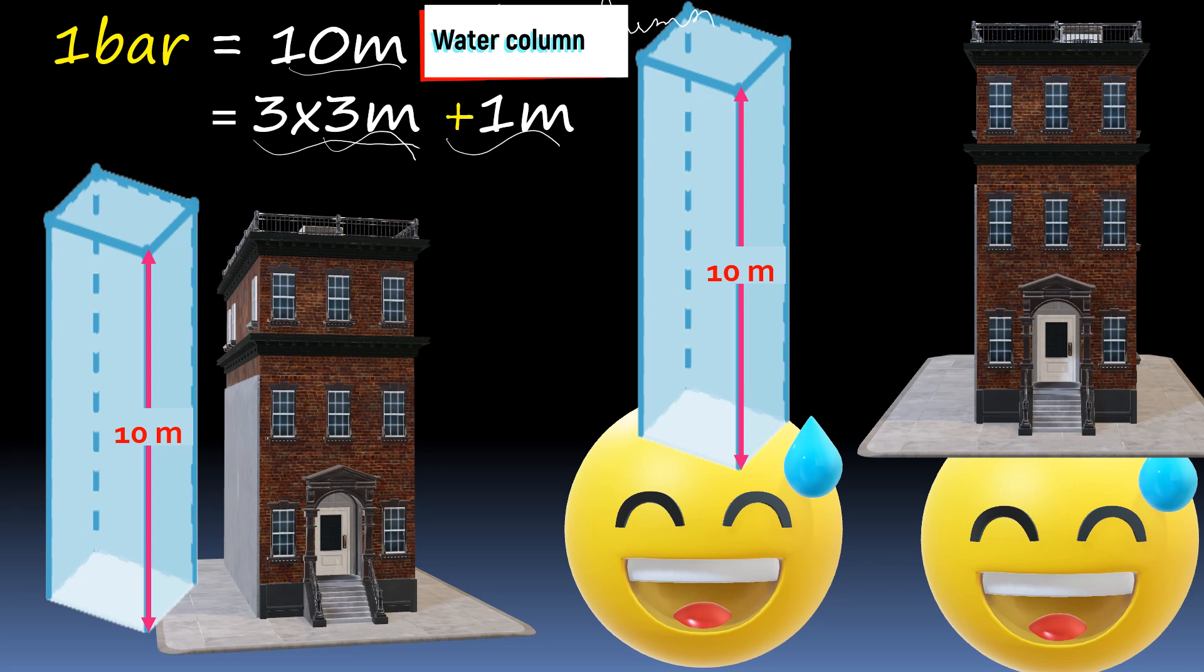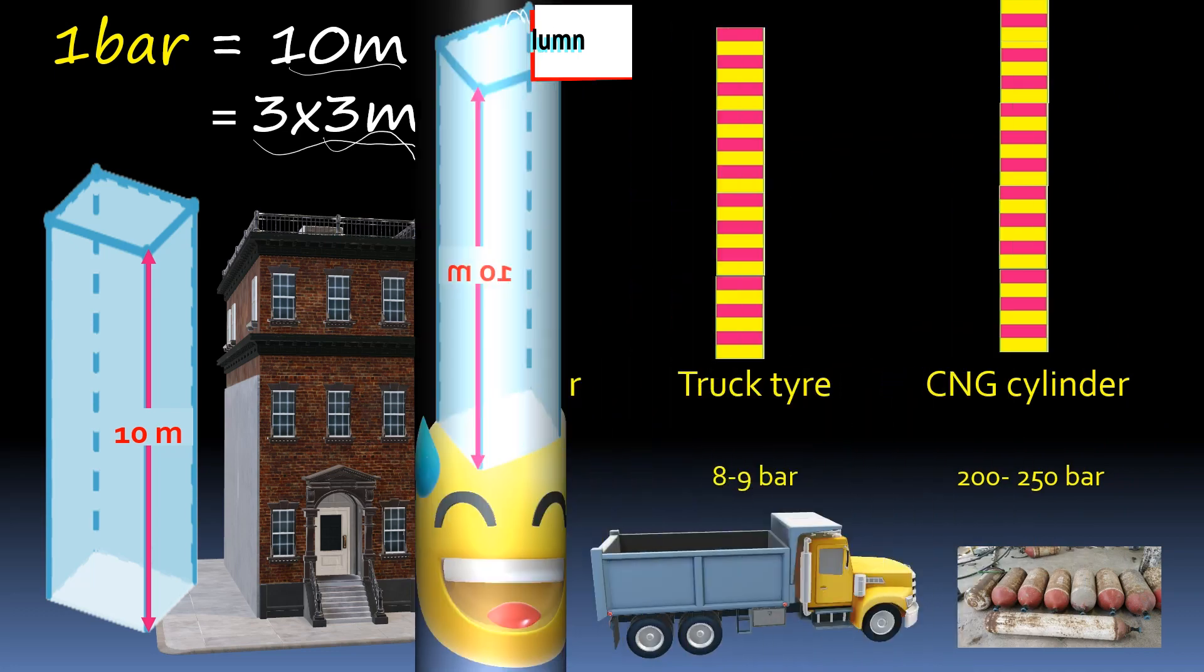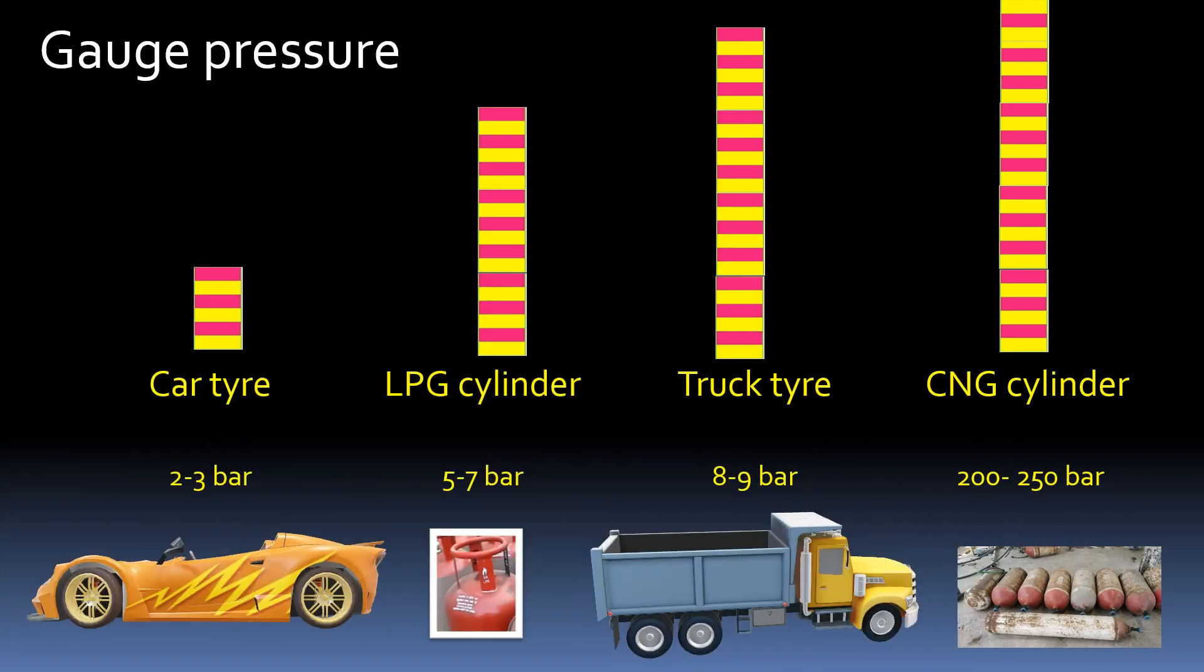Now we can visualize other pressures also, for example, what is the pressure in car tire and so on. Consider gauge pressure. Gauge pressure is relative to atmospheric pressure. Your car tire has two to three bars of pressure. LPG cylinder has five to seven bars of pressure. Truck tires has eight to nine bars of pressure. CNG cylinder has 200 to 250 bars of gauge pressure.